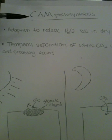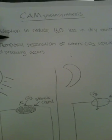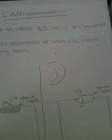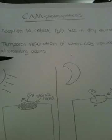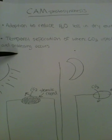The last adaptation I'll be talking about today is CAM photosynthesis. It's an adaptation to reduce H2O loss in dry environments. It is a temporal separation of where CO2 uptake and processing occurs.